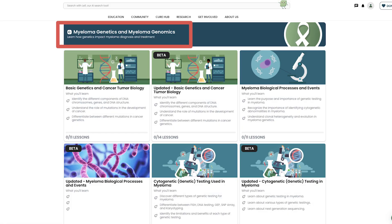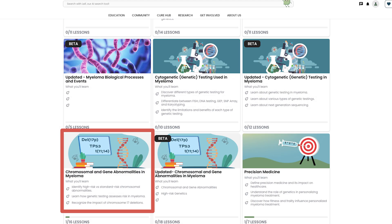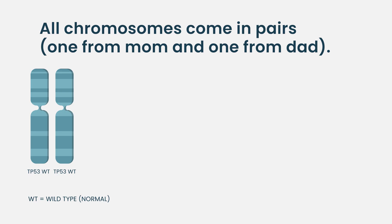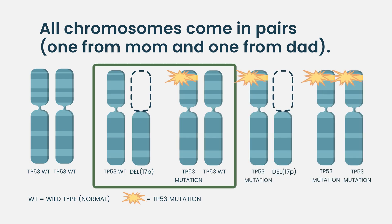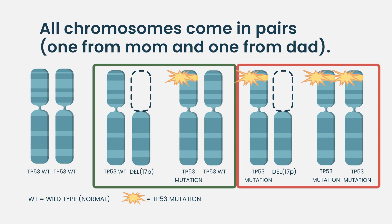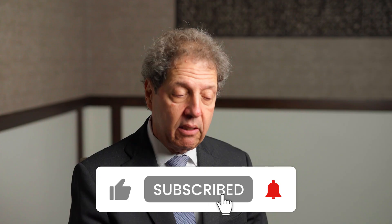Learn more about TP53 gene abnormalities in HealthTree's chromosomal and gene abnormalities course. All chromosomes come in pairs, so there are actually two copies of 17, and you can lose one or both. Losing one moderately impairs DNA repair; losing both severely impairs it. Our cells are constantly being bombarded by free radicals and oxidants that cause DNA damage, and P53 repairs that DNA.